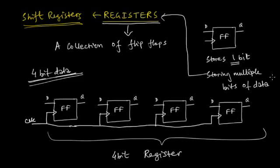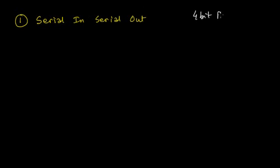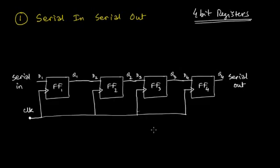Let's get on with the serial in serial out register. We're going to deal with 4-bit registers throughout. So first up, we'll use 4 flip-flops to construct a 4-bit serial in serial out register. Here we have the circuit diagram for the serial in serial out shift register constructed using D flip-flops.